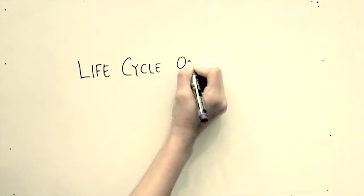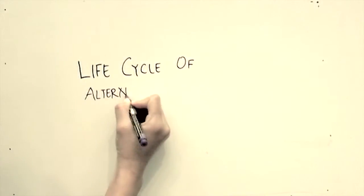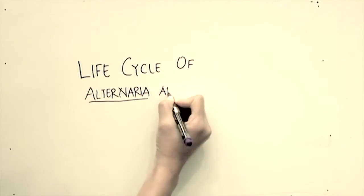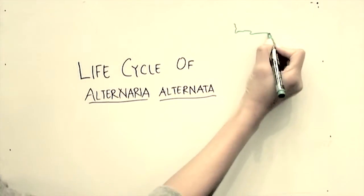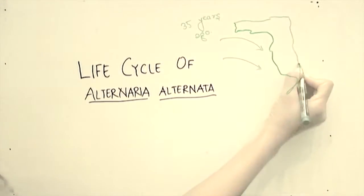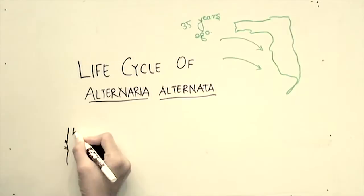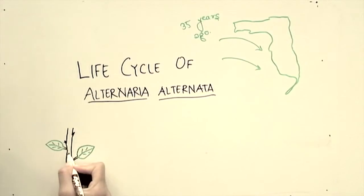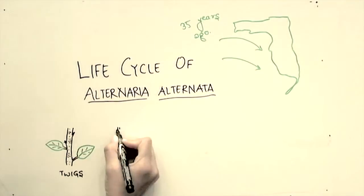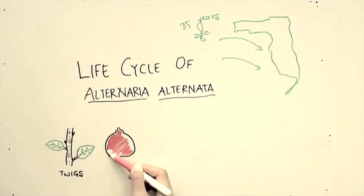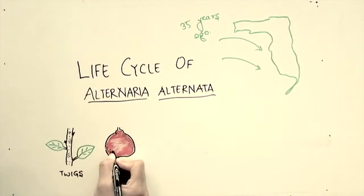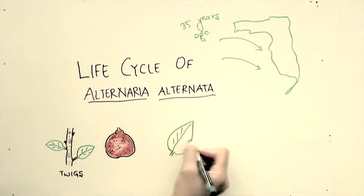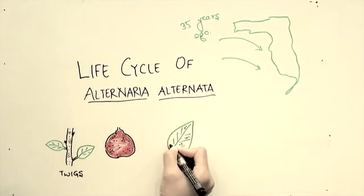Hello everyone, today we will be talking about the life cycle of Alternaria alternata, the causal agent of brown spot of citrus. This disease was found in Florida about 35 years ago. It mainly affects and develops symptoms on the leaf, but we can also see the symptoms on twigs and fruit as well.